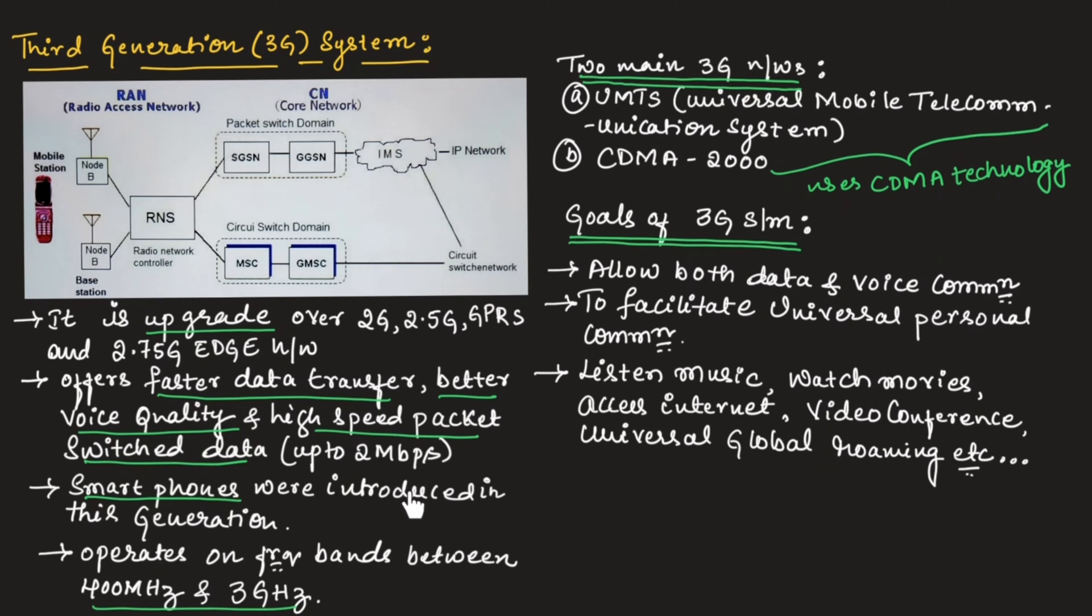In this generation, smartphones were introduced. Smartphones were first introduced in third generation system. The third generation system operates on frequency bands between 400 MHz to 3 GHz.